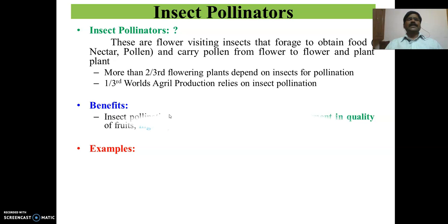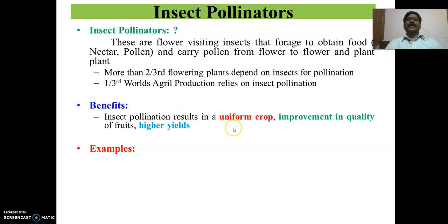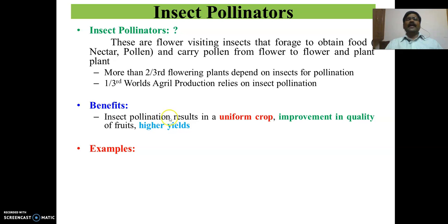Coming to the benefits of insect pollination: because of insect cross pollination, you can expect a uniform crop, and also there will be an improvement in the quality of products — for example, fruits — and there will be higher yields as well. These are the three major benefits we get through insect cross pollination: uniform crop, improvement in quality, and improvement in yield.